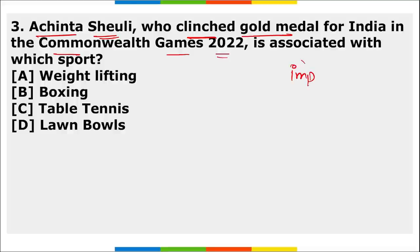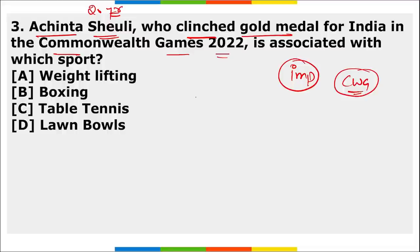Next MCQ: Achinta Sheuli, who clinched a gold medal for India in Commonwealth Games 2022, is associated with weightlifting in the 73 kg category. She is 20 years of age. All current events related to Commonwealth Games are important. Also remember Mirabai Chanu, who has also secured a gold medal here.